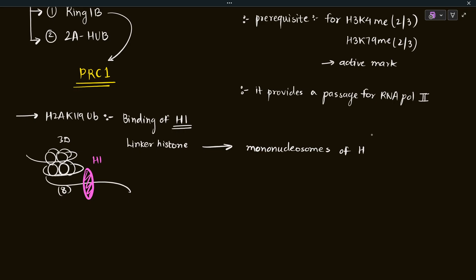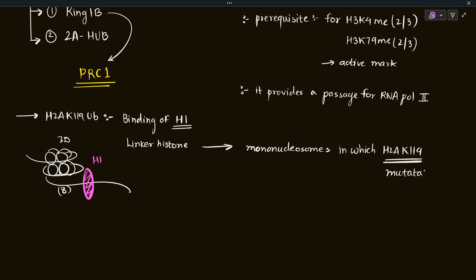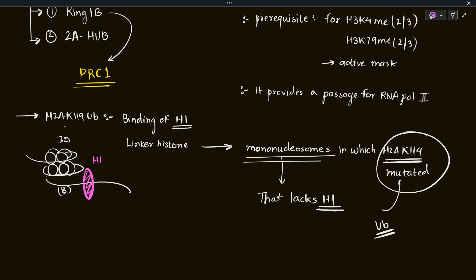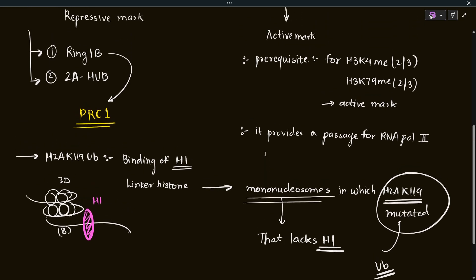This was established when scientists isolated mononucleosomes in which the H2A 119th residue was mutated — instead of the lysine residue there was something else. When those mutated mononucleosomes were isolated, they found that the mononucleosome lacked H1 protein. This showed that the H2A 119th residue is quite important for H1 binding, and the epigenetic mark added on this residue is ubiquitination.